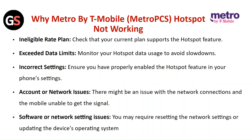Ineligible rate plan: check that your current plan supports the hotspot feature. Exceeding the data limits: monitor your hotspot data usage to avoid slowdowns. Incorrect settings: ensure you have properly enabled the hotspot feature in your phone settings. Account or network issues: there might be an issue with the network connection and the mobile unable to get signal. Software or network settings issue: you may require resetting the network settings or updating the device operating system.